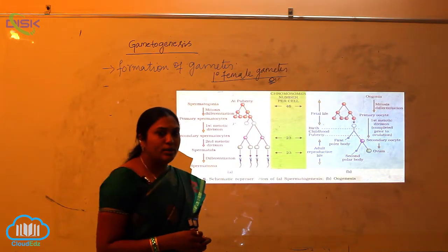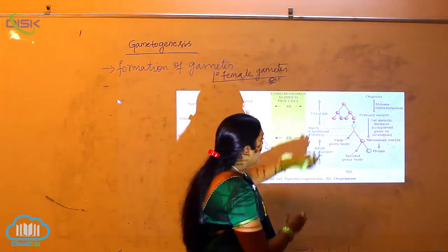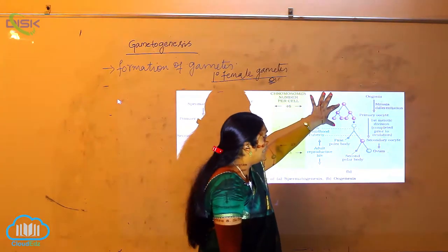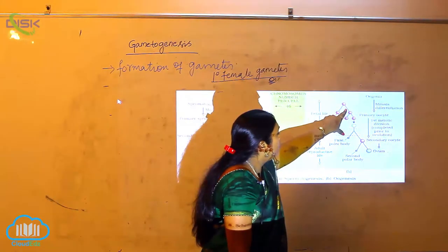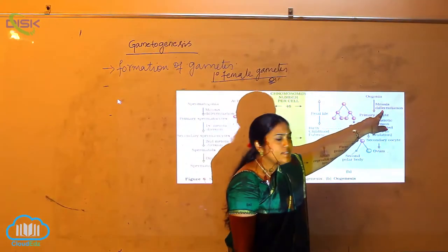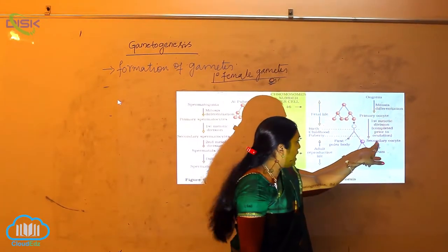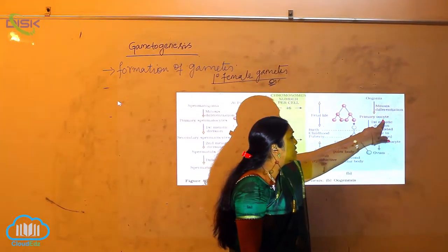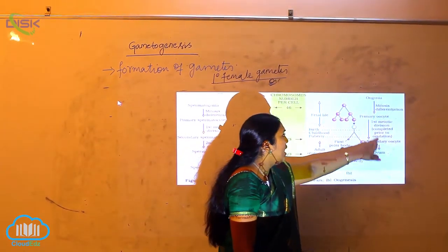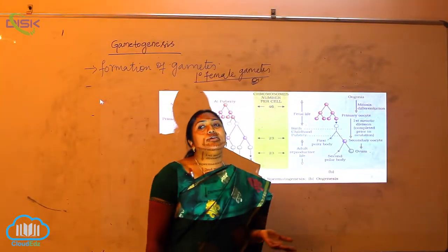Now let us see this particular process. The primary oocytes are present in the mother's womb. The primary oocytes will divide through mitotic differentiation to form the secondary oocytes. This first meiotic division is completed prior to ovulation.